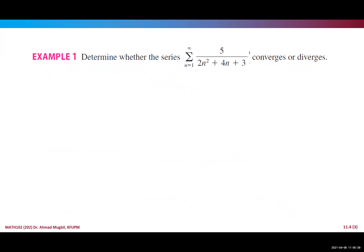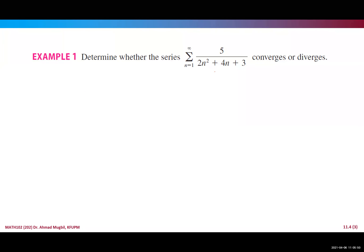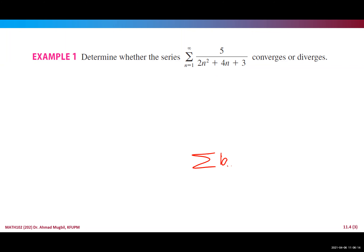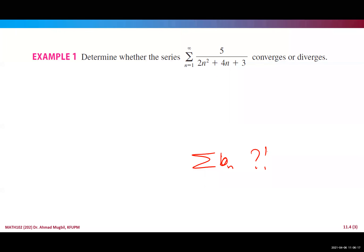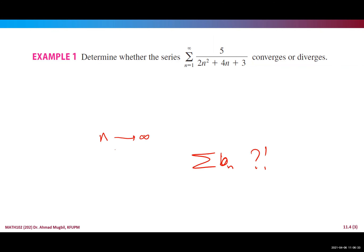Let's take an example. If you take the limit as n → ∞ of the nth term you get zero, so you cannot use the divergence test. The integral test could work here but it would be long — you'd need to complete the square. The series is clearly decreasing, positive, and continuous, so the comparison test is appropriate. The question is: what do we compare this with?